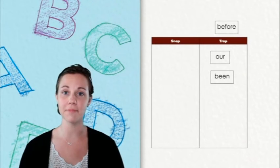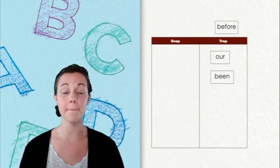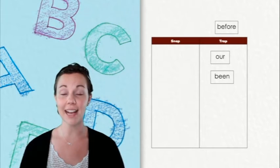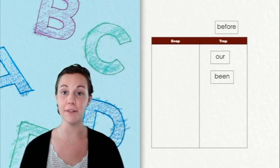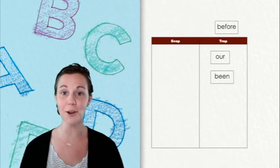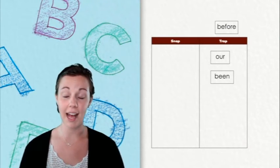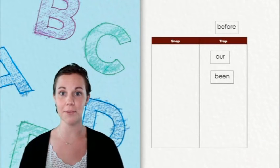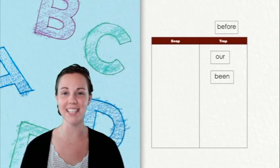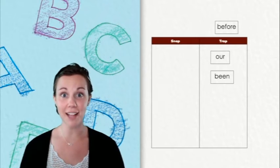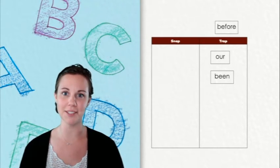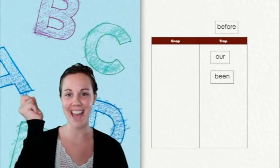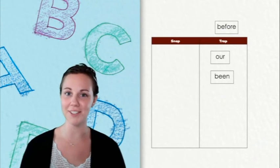Here's our final word. It's the word before. I hear a long E in the first syllable because it's an open syllable. I also hear a long O in the second syllable because it has a magic E. It's following all of our word rules. That's a snap. Let's put it in the chart.